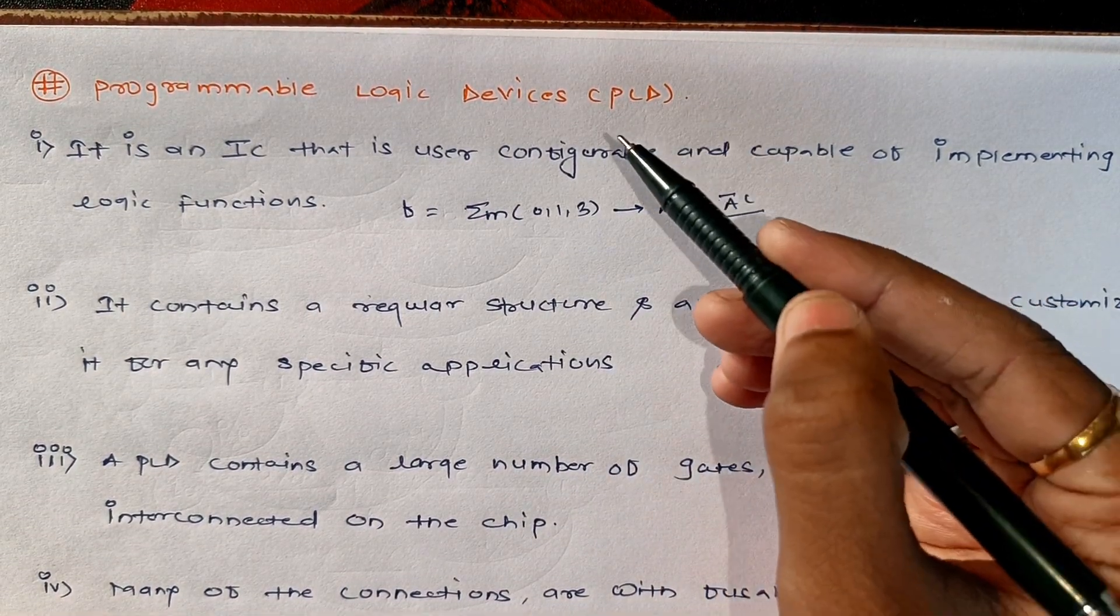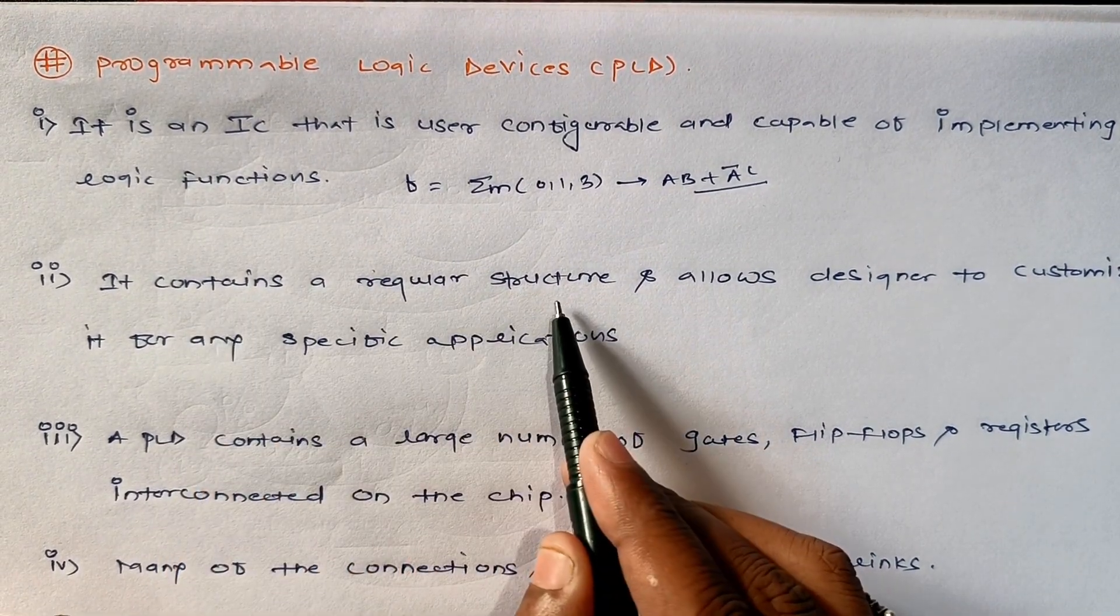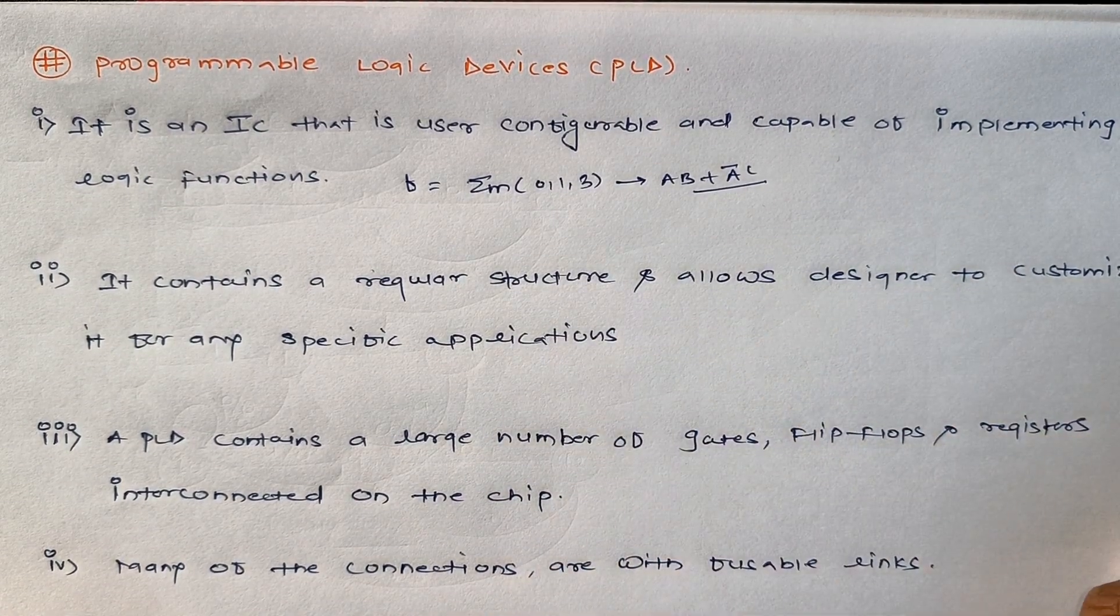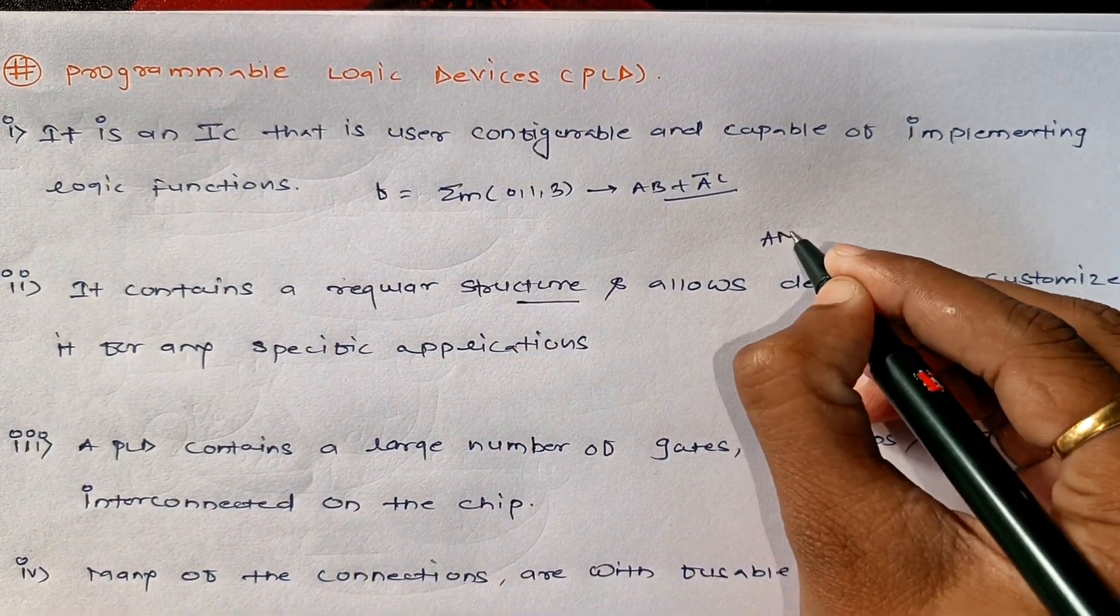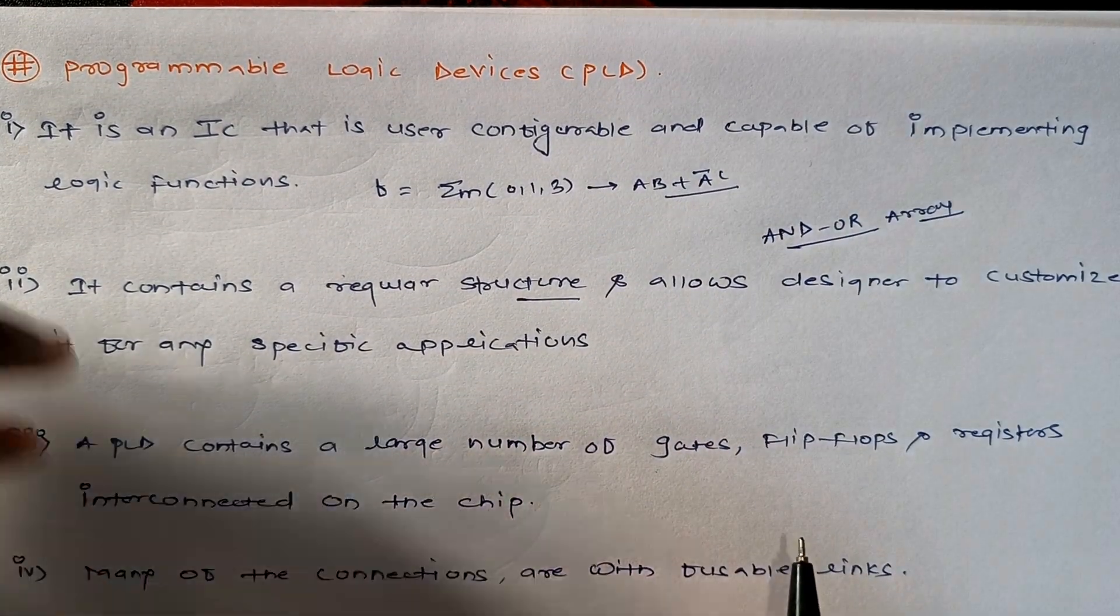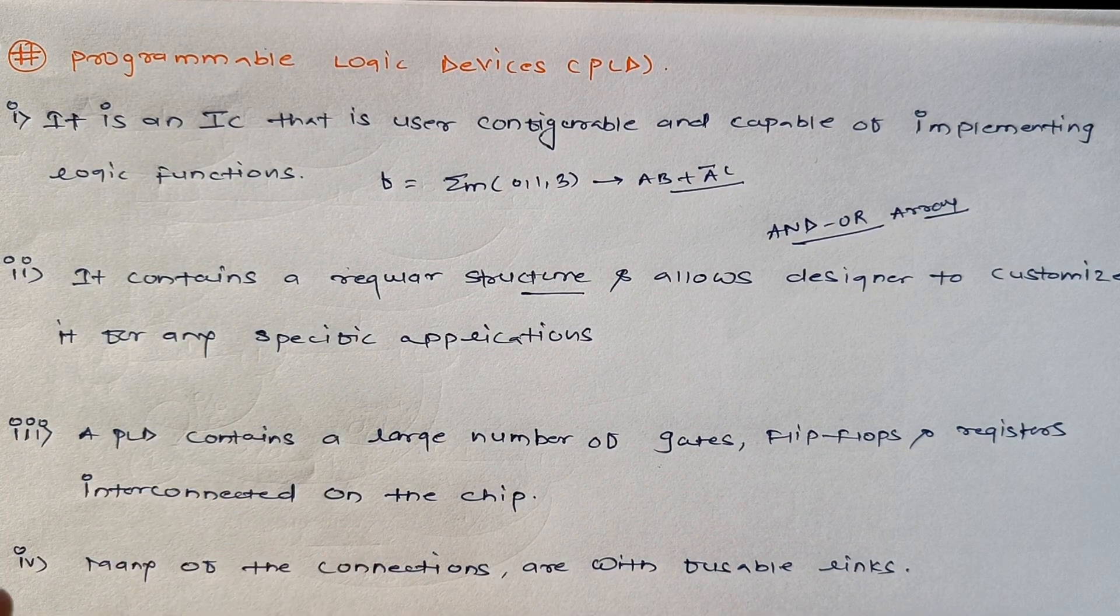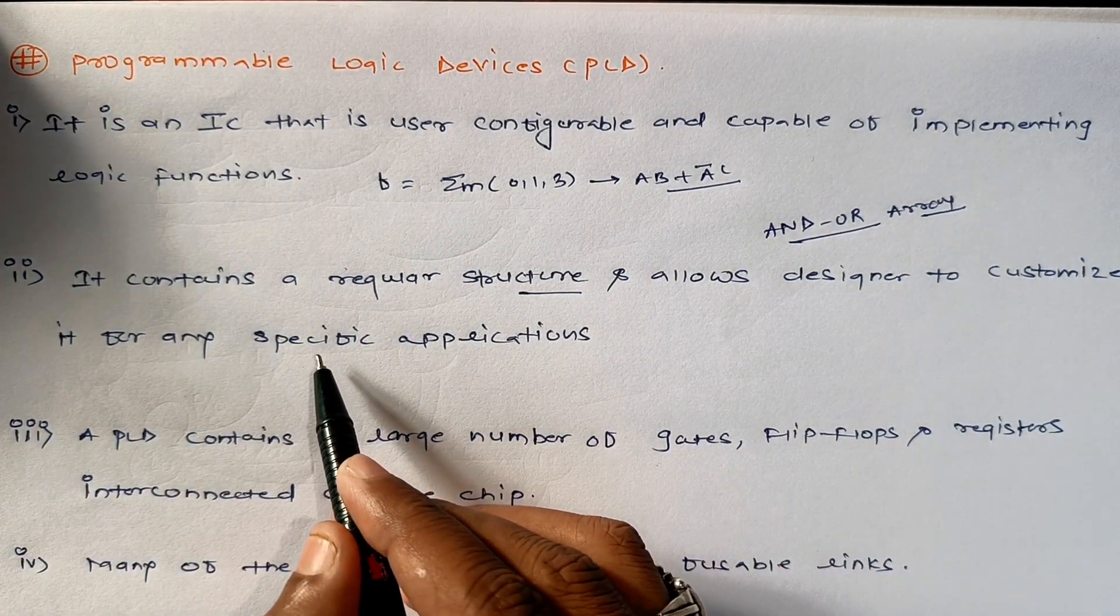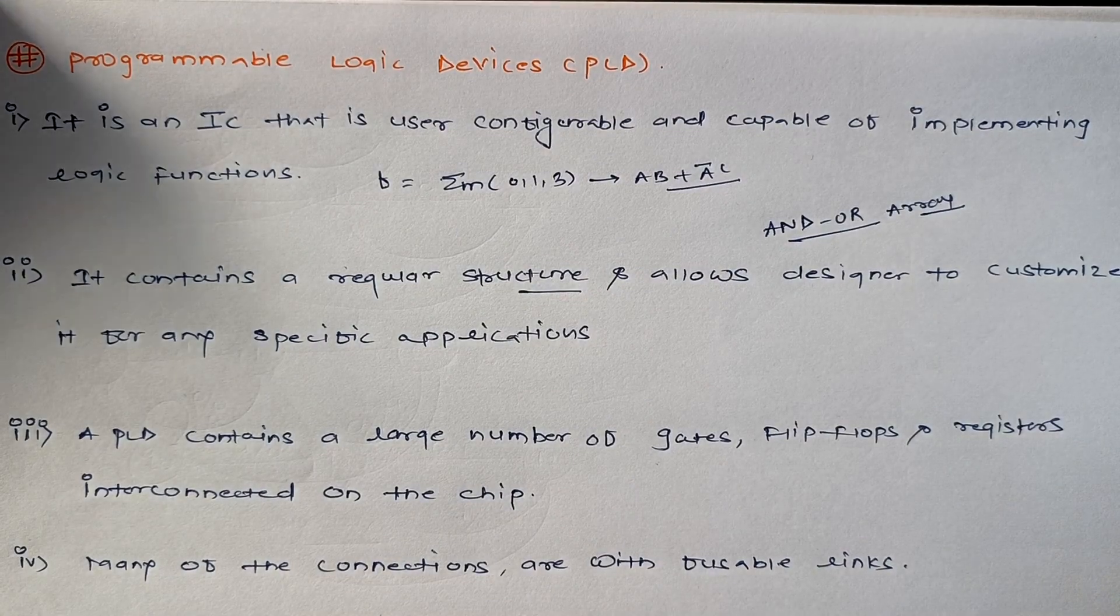What it actually contains: PLD contains a regular structure and it allows the designer to customize it for any specific application. It contains a regular structure of AND and OR arrays. That means in case of PLD we'll get a fusing of AND gate as well as fusing of OR gate, and depending upon our application, depending on our needs, it can be modified or customized.